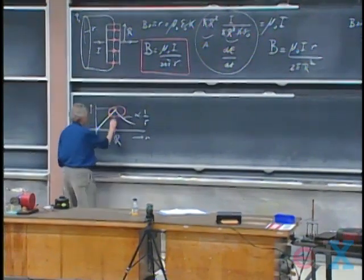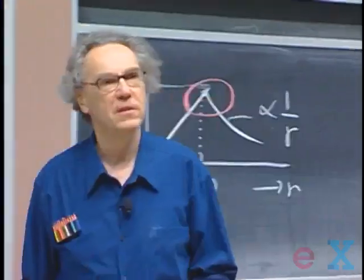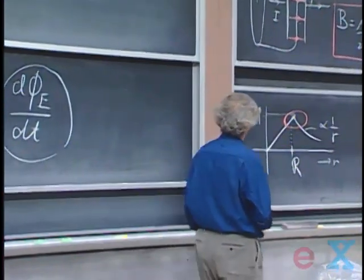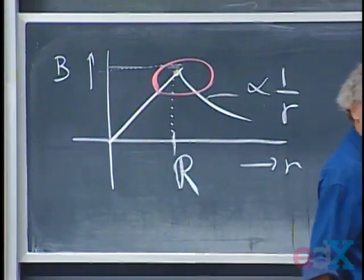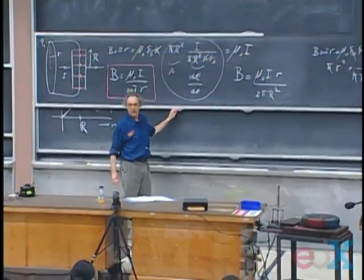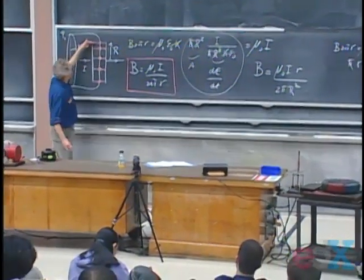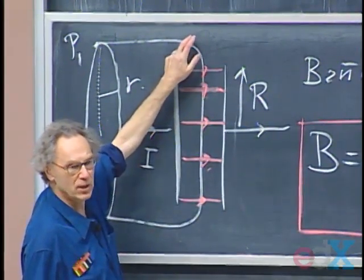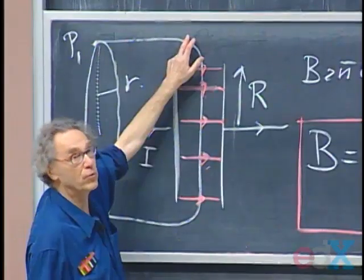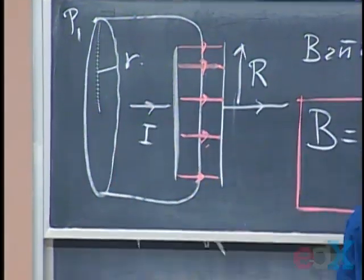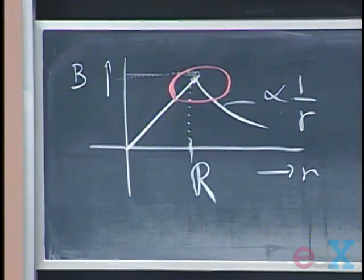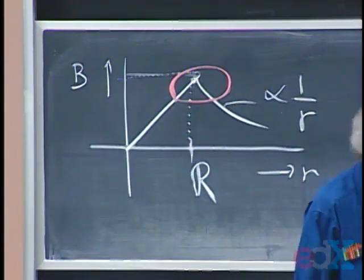This part of the result near the edge cannot be correct, and I cannot make it right. The reason is that we assumed there are no fringe fields — that the electric field is only inside the capacitor and zero outside, so there's no dE/dt and no changing electric flux outside. That's not true. When you get close to the edge, the calculation breaks down, and there's no way to correct for it because fringe fields differ from capacitor to capacitor and are not easy to calculate.